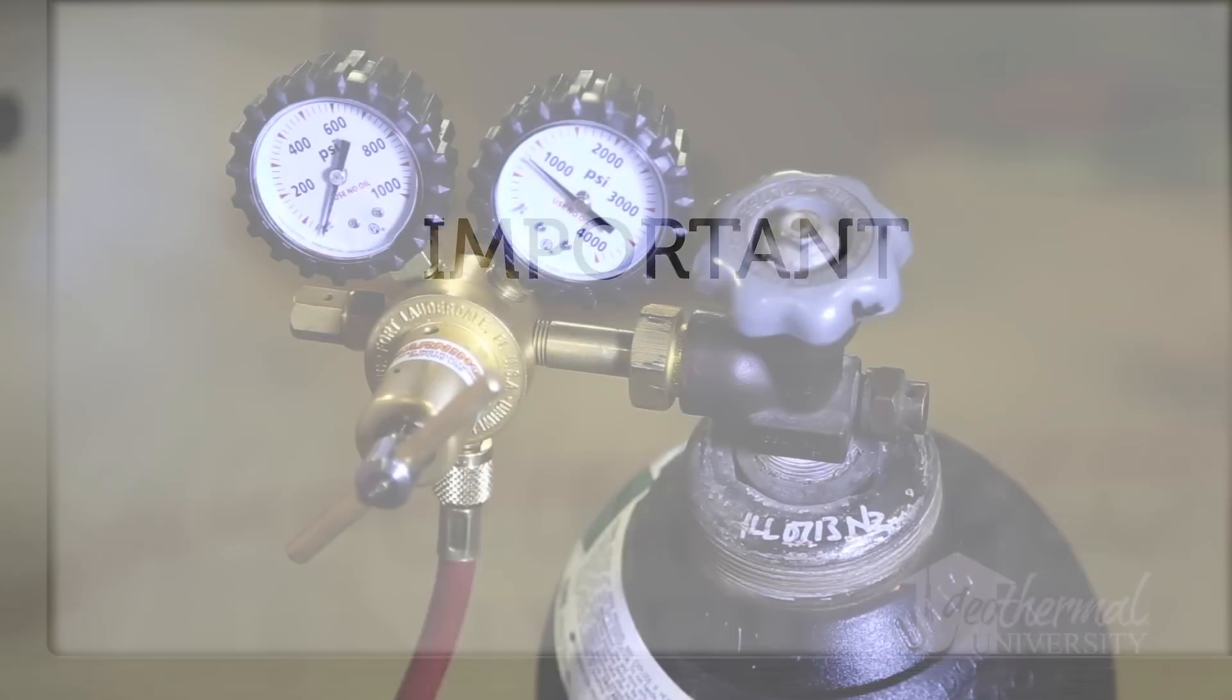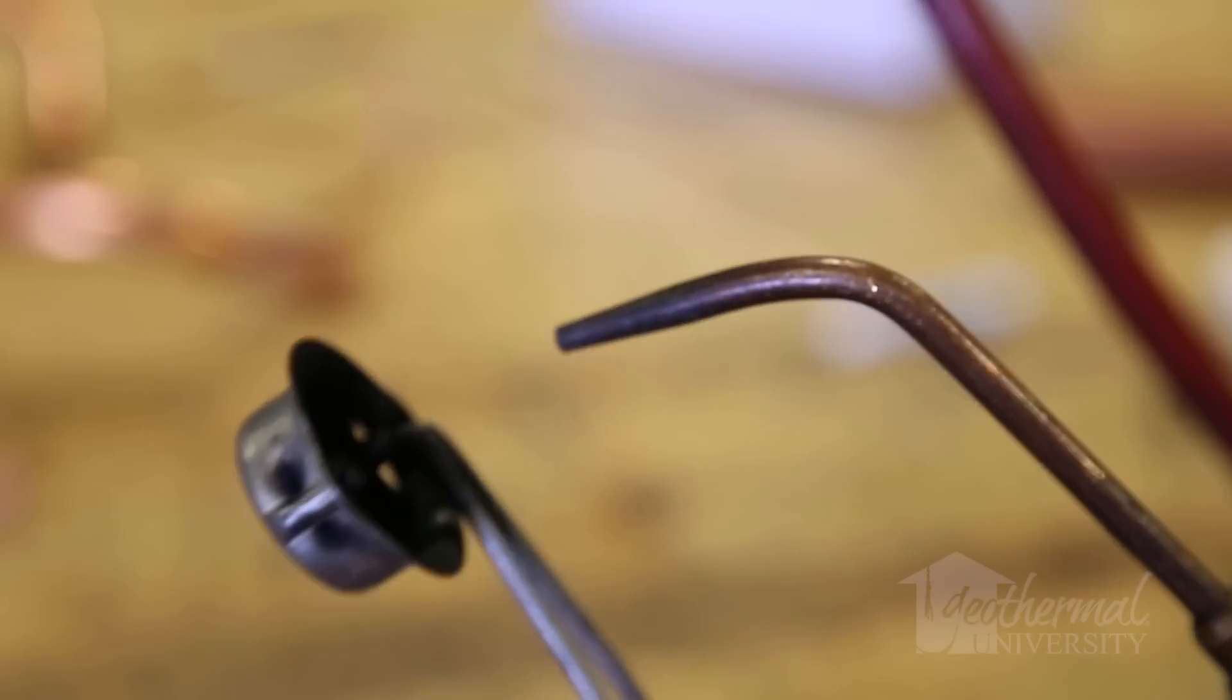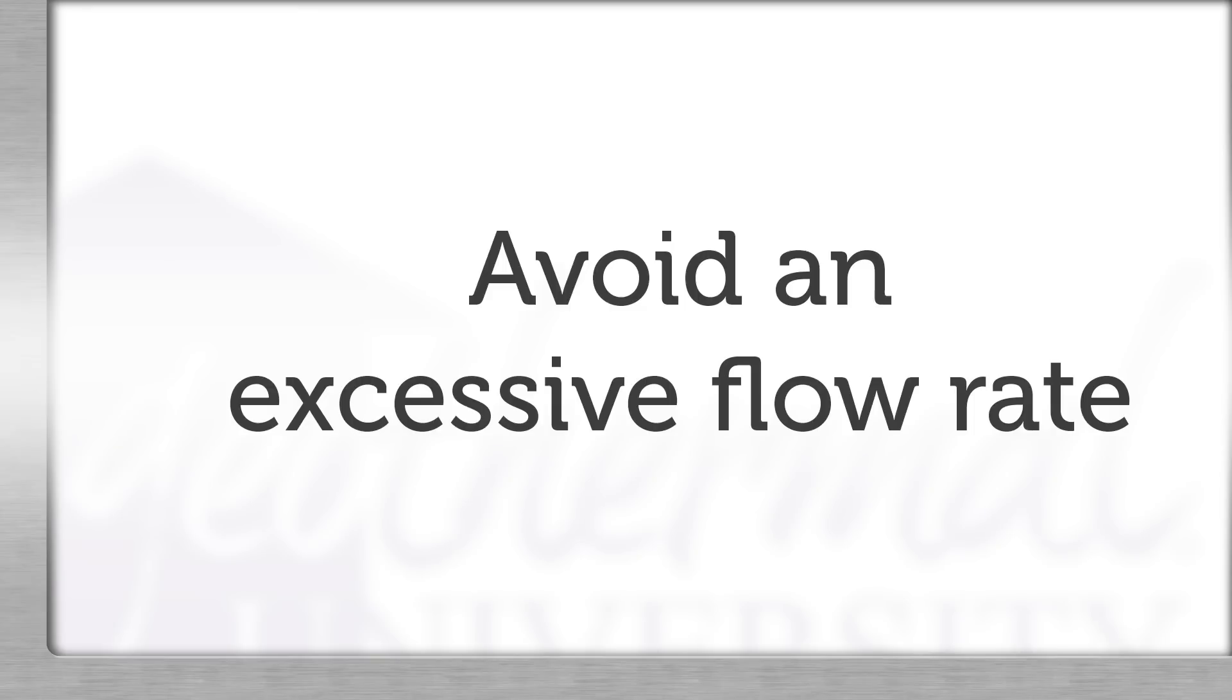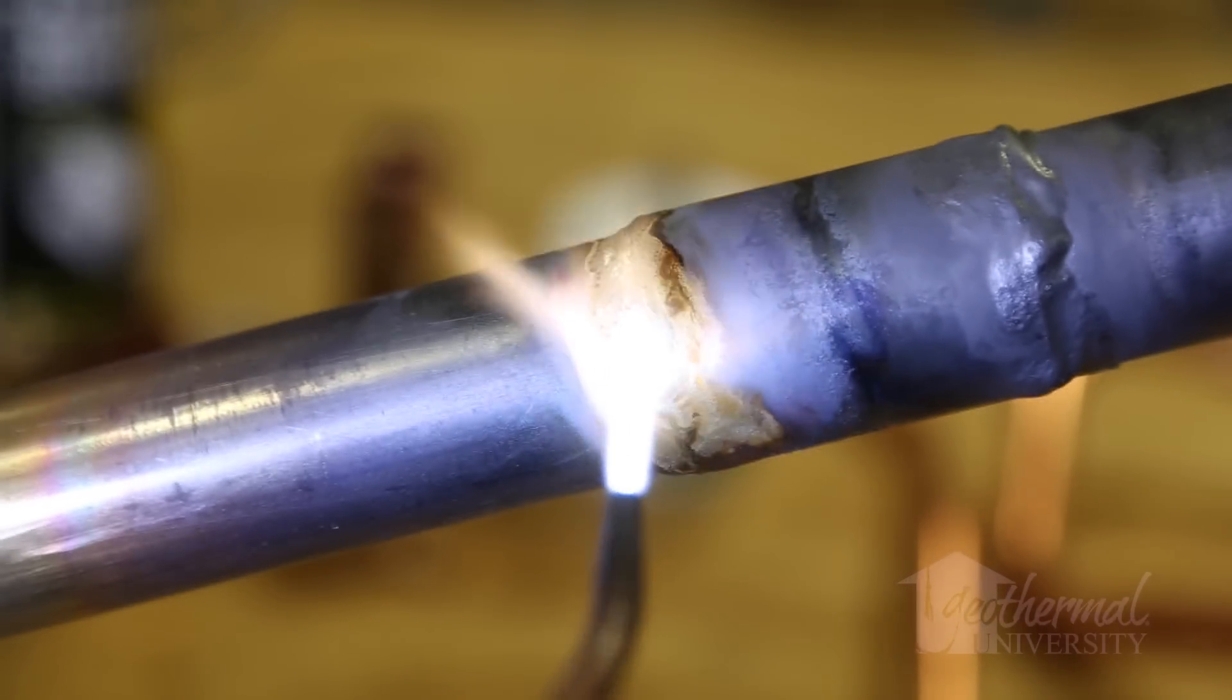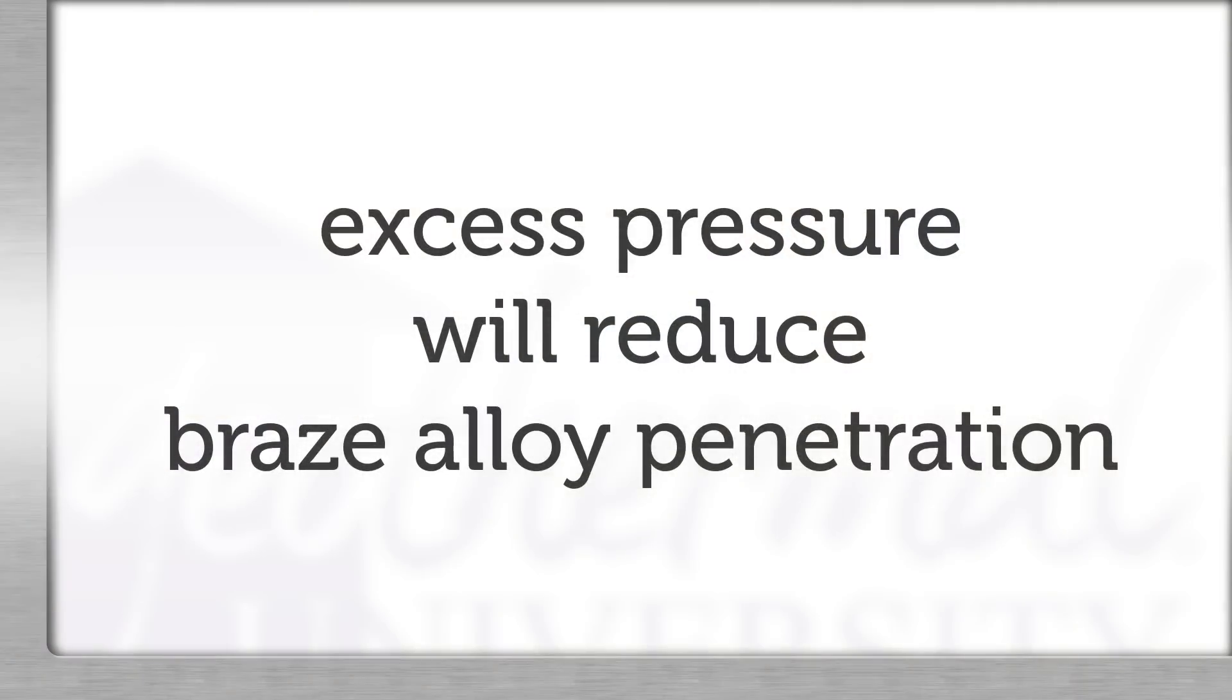Initiate flow before heating and continue to flow nitrogen until the part has cooled. Avoid an excessive flow rate that builds pressure inside the tube. A high flow rate will tend to cool the tube, reducing brazing heat efficiency. Excess nitrogen pressure can build up inside the tube and reduce braze alloy penetration.